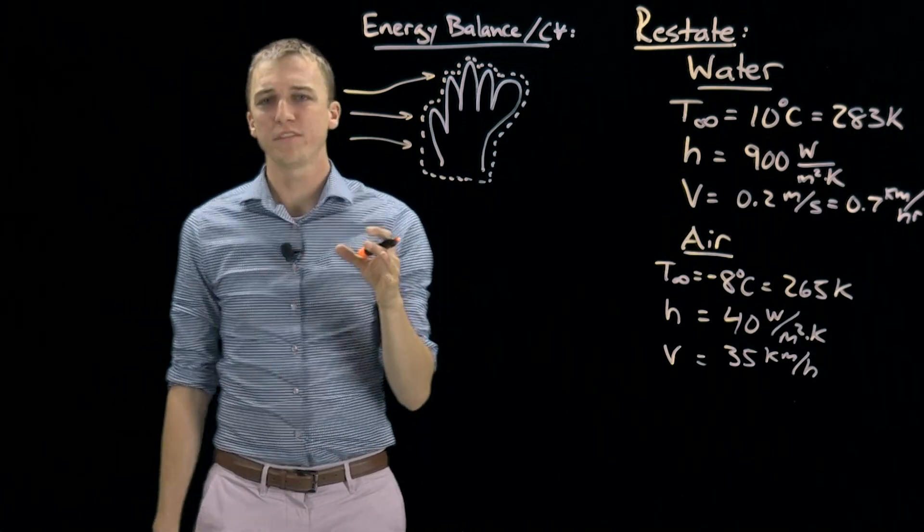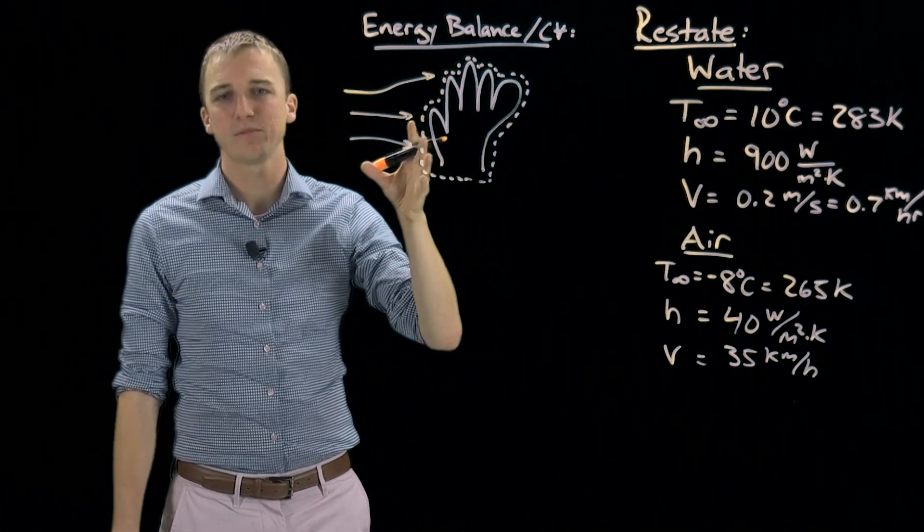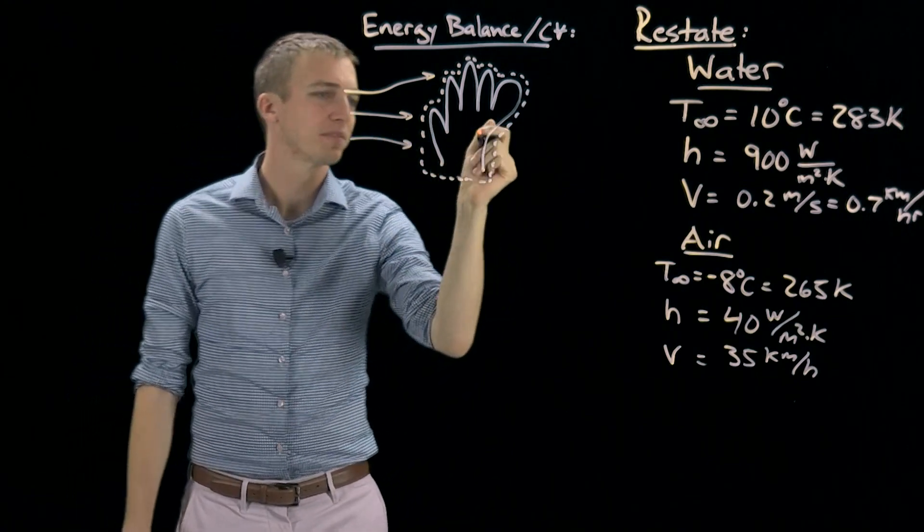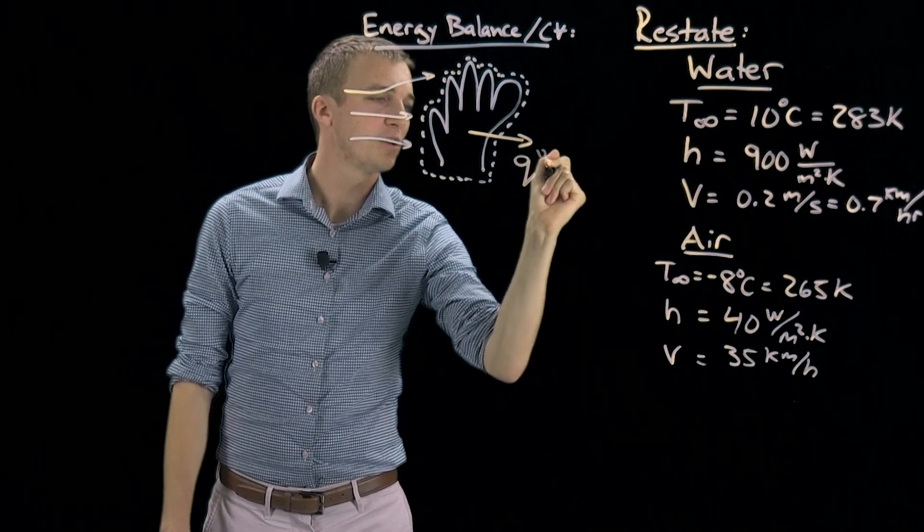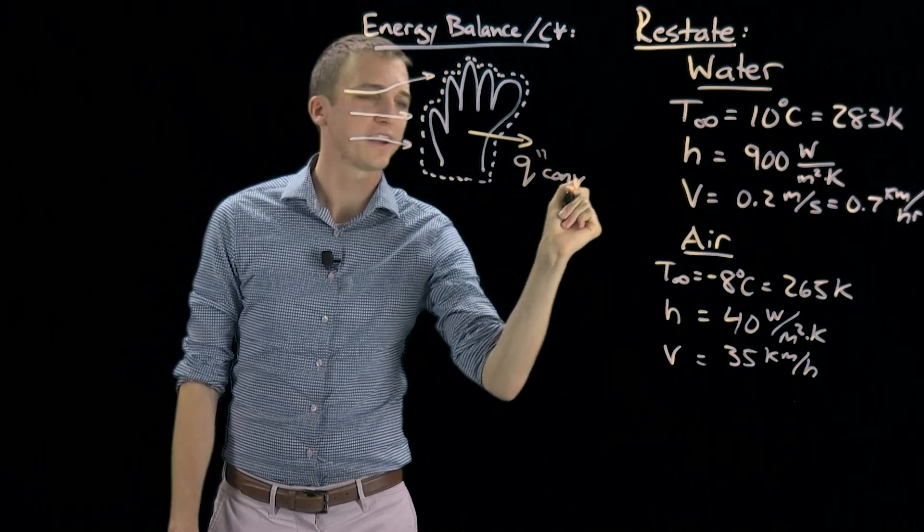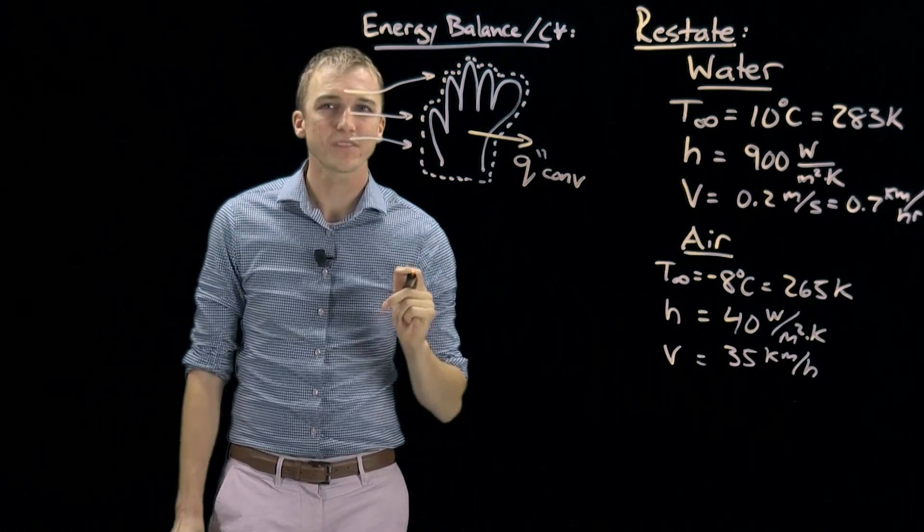We have one mode of heat transfer here because we have a fluid in contact with the surface of our hand. We have convection heat transfer. We'll draw that as an arrow like this and label it q double prime convection. Remember q double prime is a heat flux.